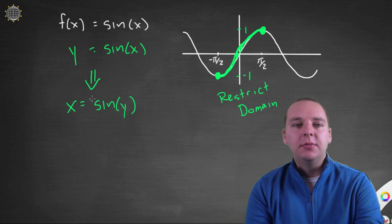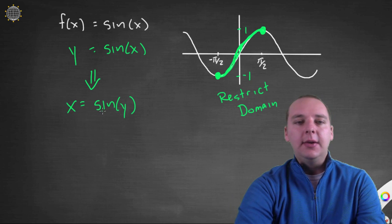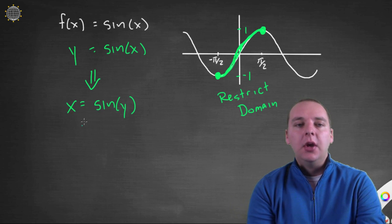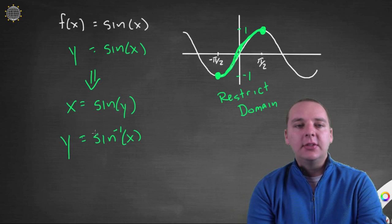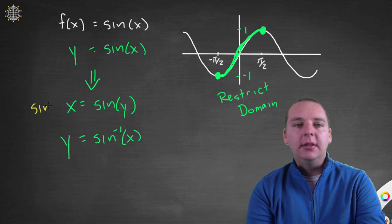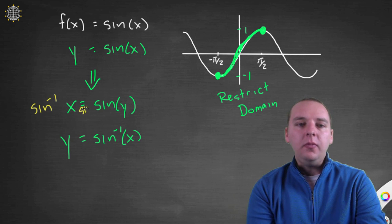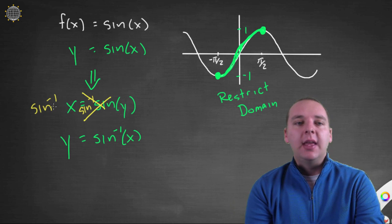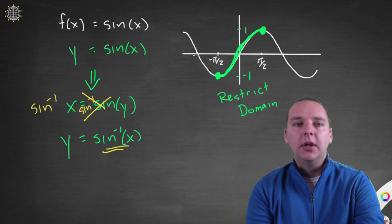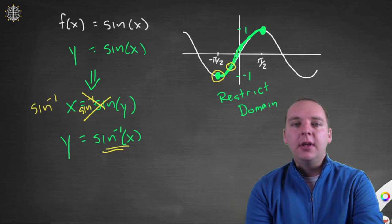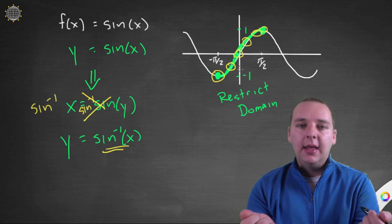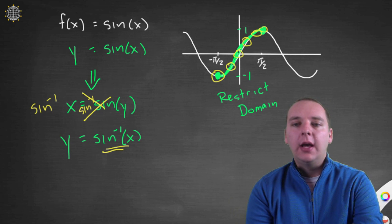Here's where the inverse relationship comes in. We're going to write it in a slightly different fashion: y equals sine inverse of x. These two statements are equivalent. If you applied sine inverse to both sides, the sine inverse and the sine would cancel — kind of like a square and a square root — and you'd have sine inverse of x equal to just y. So this is your inverse function for sine x, and it takes every (x, y) point on the graph of sine and switches them.